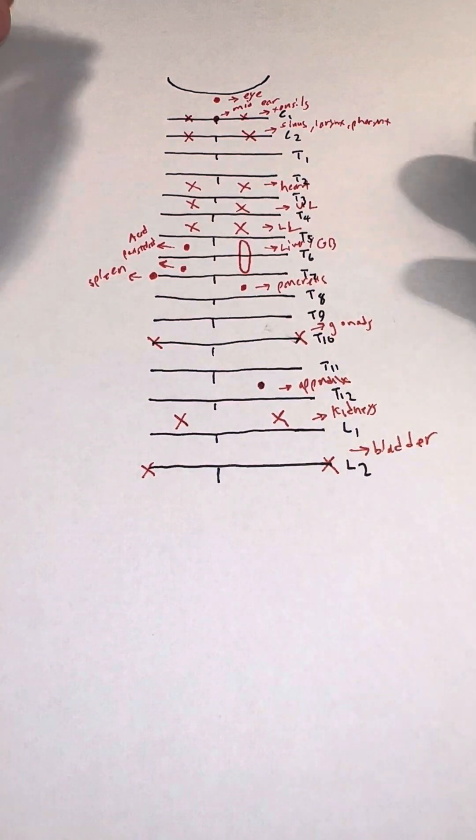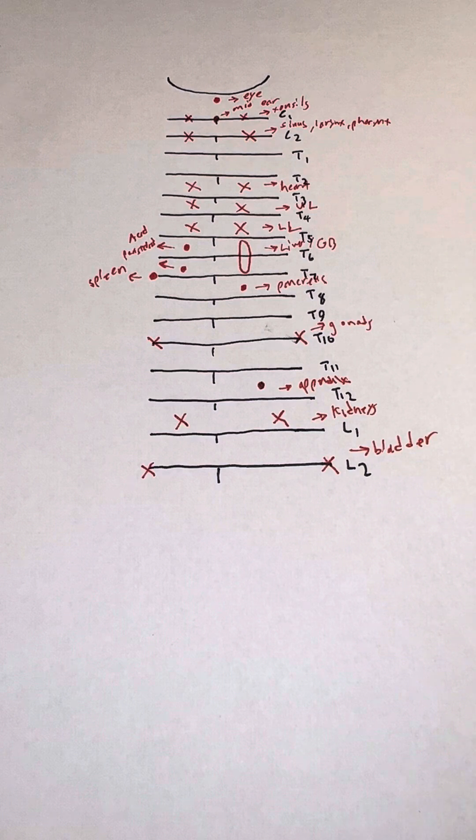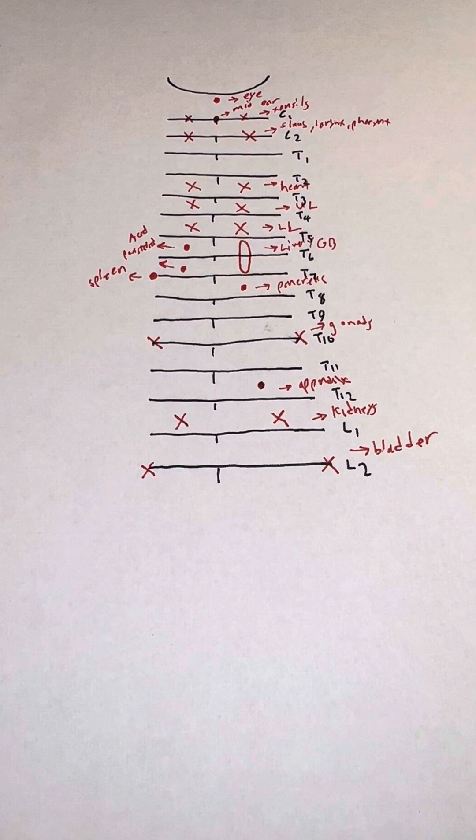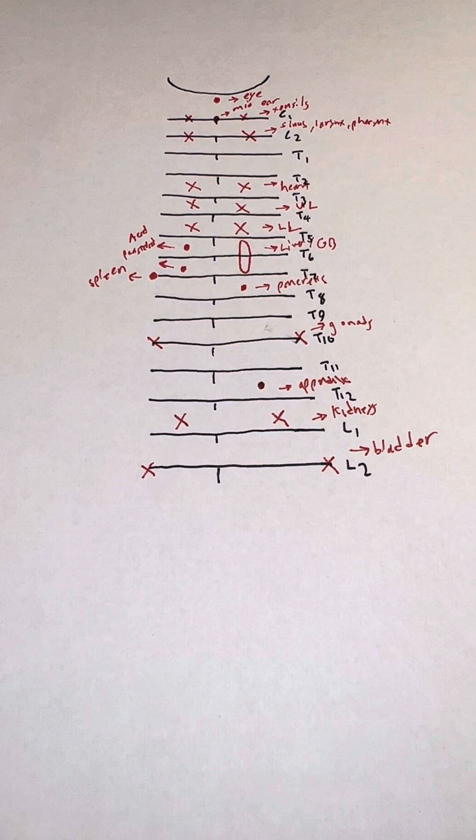That basically sums up the whole chart. I know there may be some structures missing, but these are the most important ones you'll want to remember and write down to get those points for posterior Chapman's points. Leave a comment, like, subscribe, and let me know if you want anything else. Thanks, hope this is helpful. See you next time.